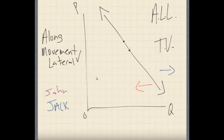What about if John all of a sudden gets married? He gets a new house and needs to buy more TVs. Is that lateral movement or movement along the curve? That's going to be lateral movement too. Now if you're wondering why — let's say John buys NFL stuff, and the price for the NFL package goes up. What happens then? That is going to be lateral movement as well — either increase or decrease. Probably a decrease, because the price went up.